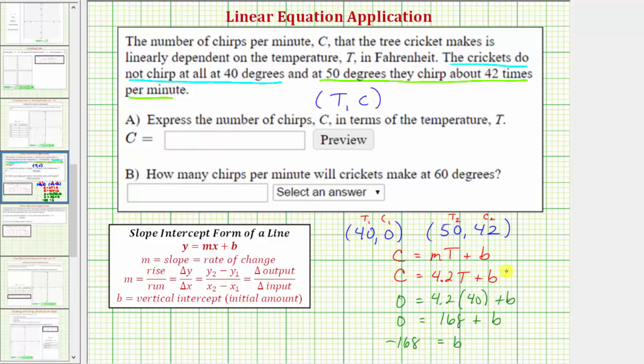Now we'll substitute this value for B into our equation, which gives us the equation C equals 4.2T minus 168. This is the equation we need for part A. Notice C equals is already here, so we only enter 4.2T minus 168.